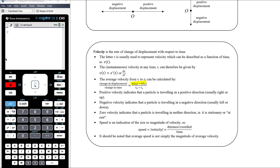Speed is the magnitude of velocity — the absolute value of the velocity. If it's negative you ignore it; if it's positive it stays positive. Speed is defined as distance travelled over time. Distance travelled doesn't always correspond to displacement directly, so you need to think carefully about what's happening in your problem. It should also be noted that average speed is not simply the magnitude of average velocity.